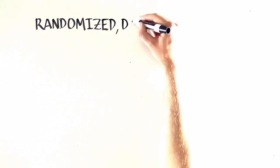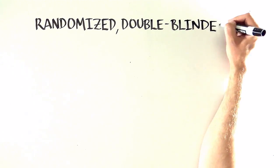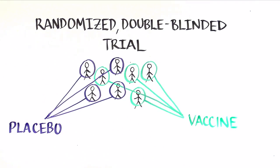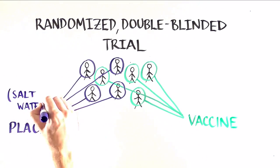Next, we start what is called a randomized, double-blinded clinical trial. What that means is that after volunteers enroll in a study, a computer randomly decides whether they will get the vaccine or whether they will get the placebo, which is usually just salt water.